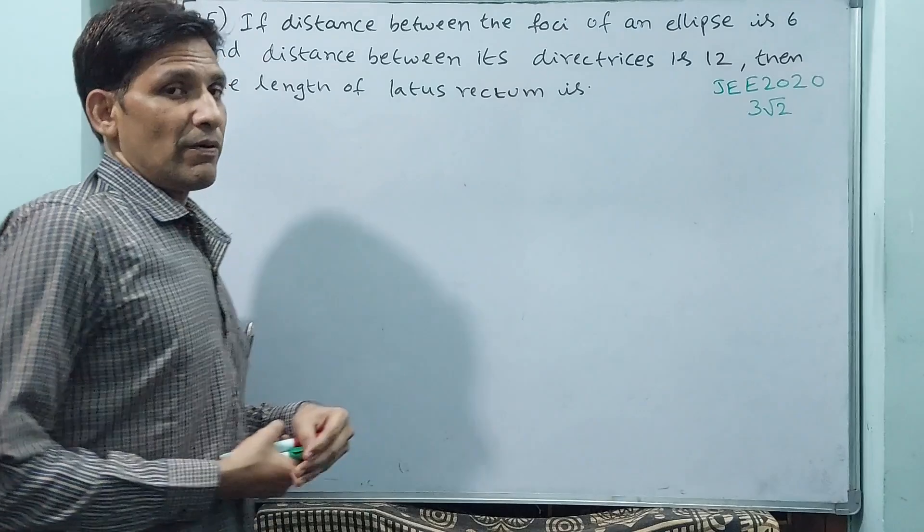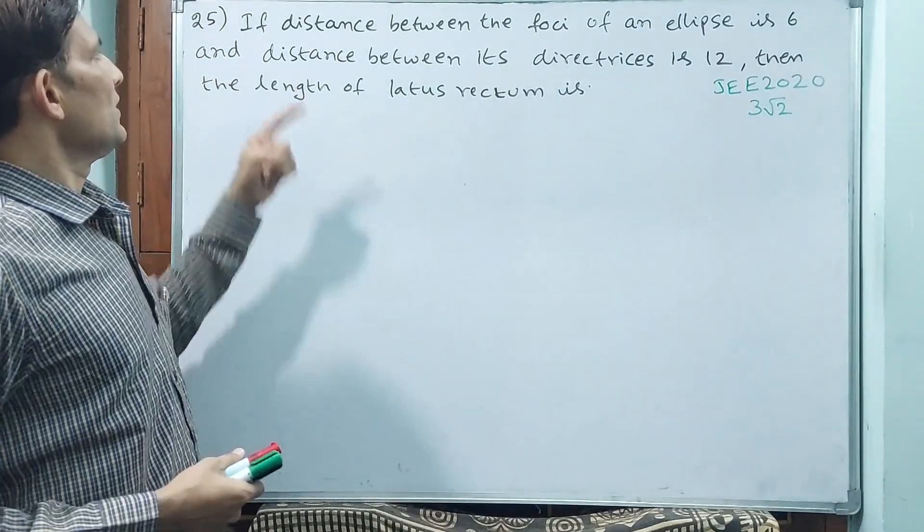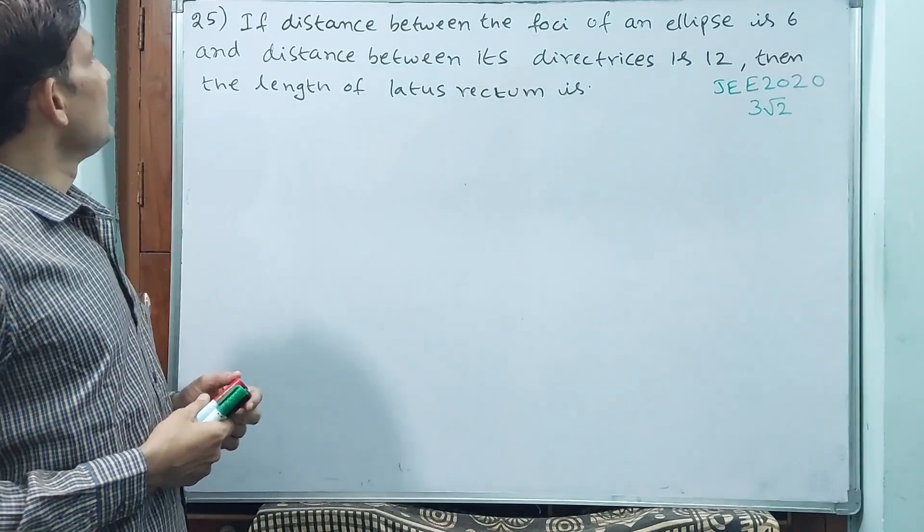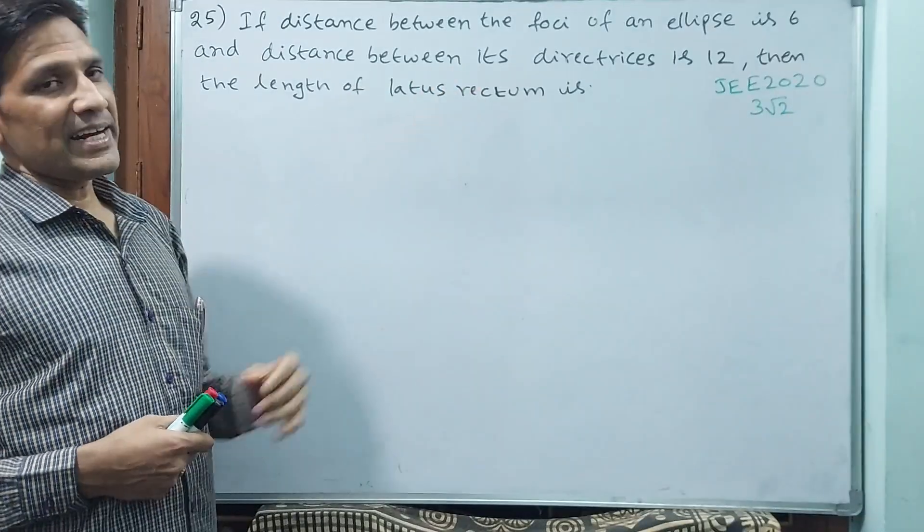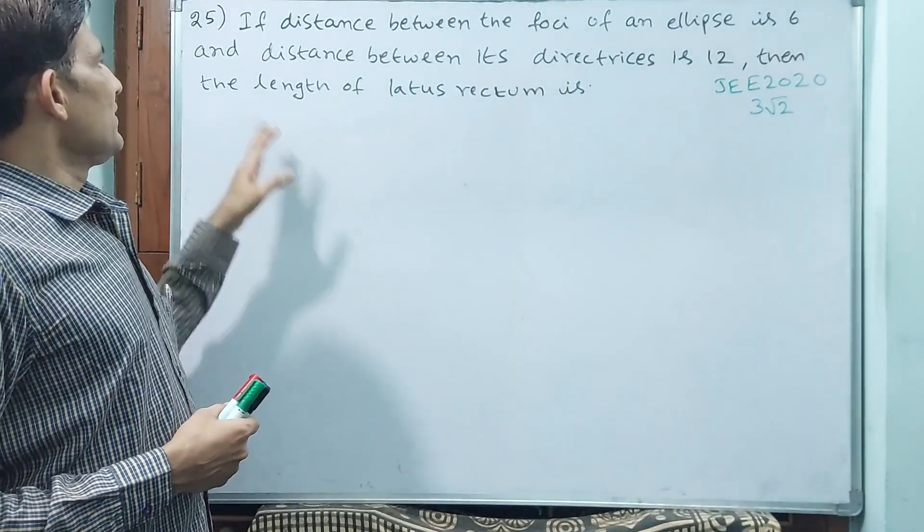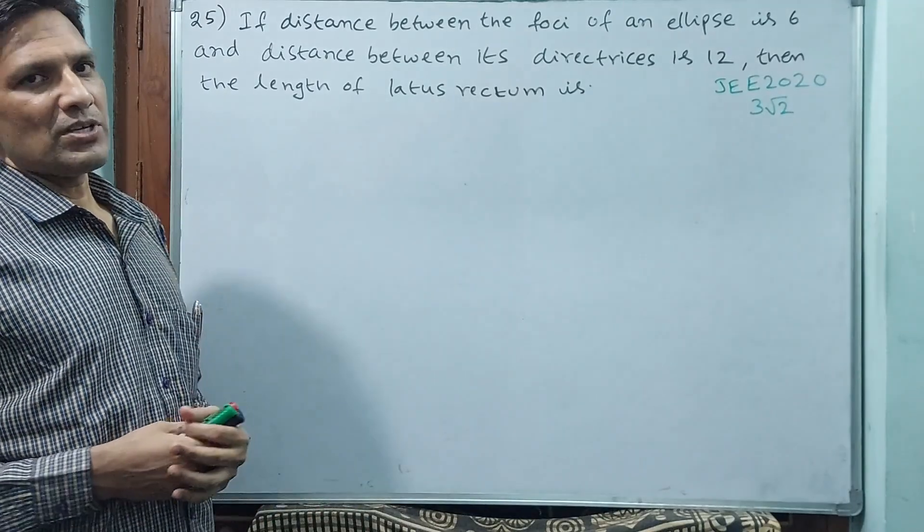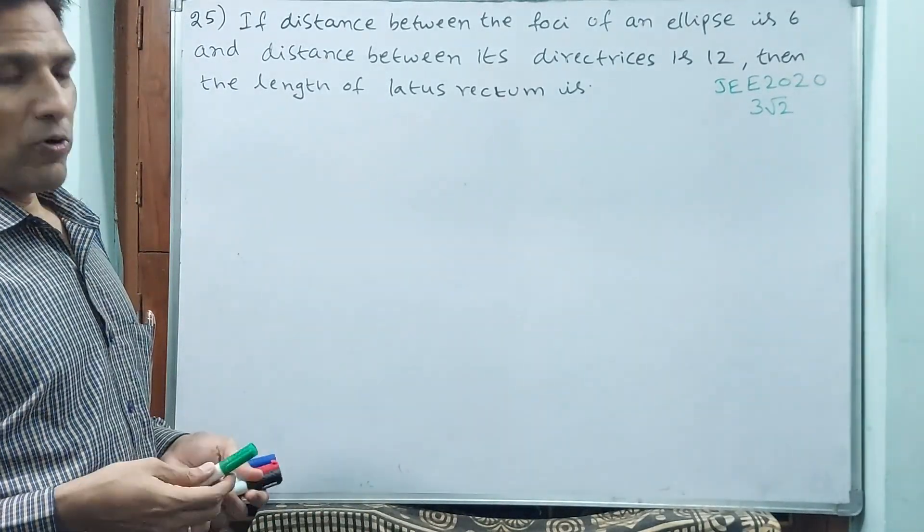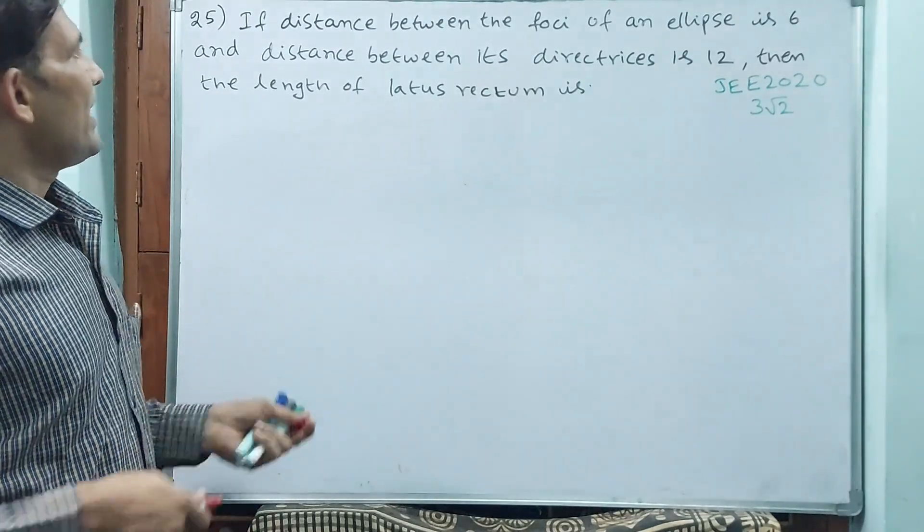Let us see how they have asked this question. If distance between the foci of an ellipse is 6 and distance between its directrices is 12, then the length of the latus rectum is how much? This is the question. Let us see how we are going to solve this. Directly I am writing it.